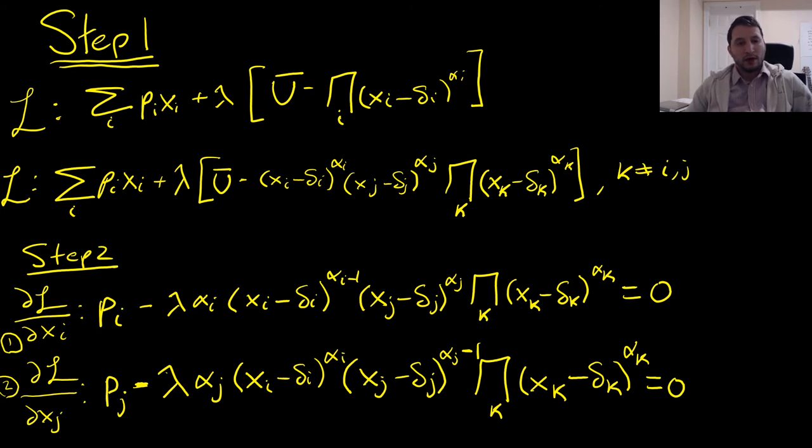Step number one, we're going to write our Lagrangian here as follows. Notice that we're able to break up this product term of our Cobb-Douglas into these three parts here where we're considering good I, good J, and we have every other good, good K, where K is not equal to I or J.